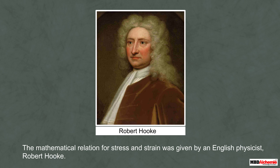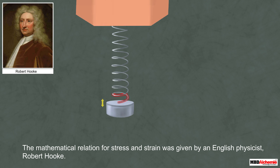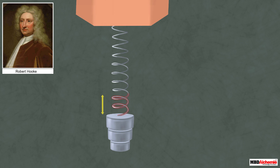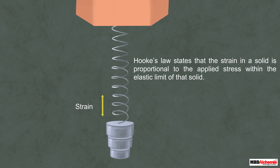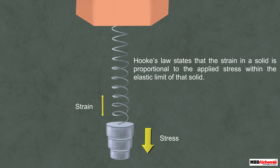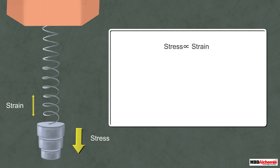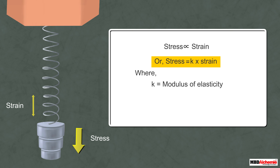The mathematical relation for stress and strain was given by the English physicist Robert Hooke. He performed experiments on springs and found that the elongation produced in a body is proportional to the applied force. He presented his law in 1676, known as Hooke's law. Hooke's law states that the strain in a solid is proportional to the applied stress within the elastic limit of that solid. Thus, stress is proportional to strain, or stress = K × strain, where K is the proportionality constant known as the modulus of elasticity.